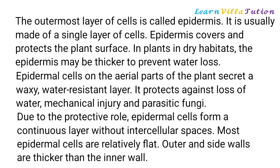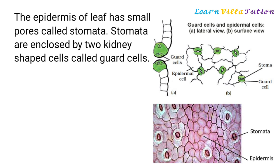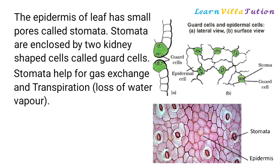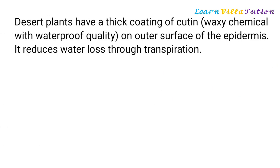Most epidermal cells are relatively flat. Outer and side walls are thicker than the inner wall. The epidermis of a leaf has small pores called stomata, enclosed by two kidney-shaped cells called guard cells. Stomata help for gas exchange and transpiration — loss of water vapor. In roots, epidermal cells help in water absorption, and their long hair-like parts increase absorptive surface area. Desert plants have a thick coating of cutin, a waxy chemical with waterproof quality, on the outer surface of the epidermis, reducing water loss through transpiration.